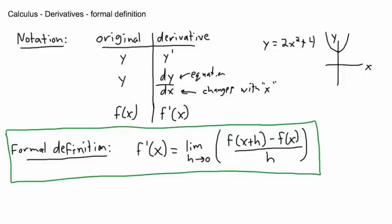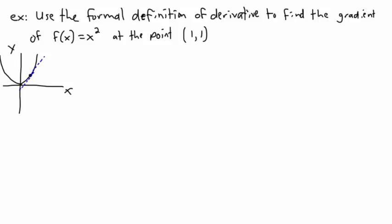In the last video I showed you the formal definition for a derivative — that's just how we find the slope of the tangent. It may look complex, but I showed you with Autograph how it works. Now our goal is to use that formal definition to solve this question: find the gradient of f(x) = x² at the point x = 1, y = 1.